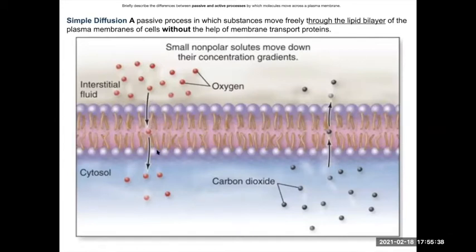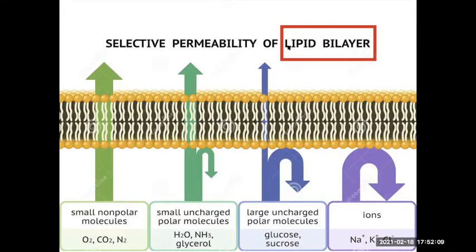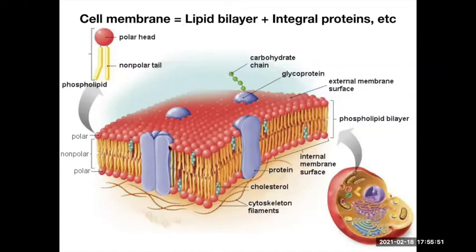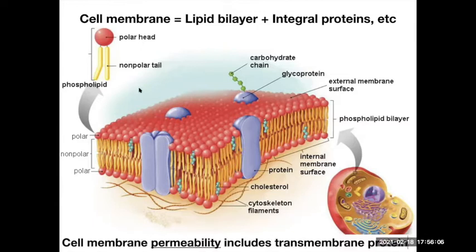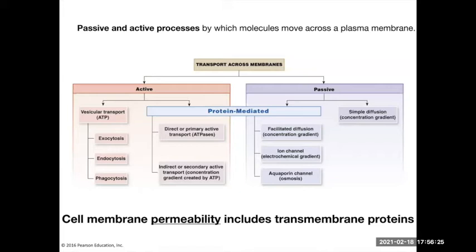Simple diffusion through the lipid bilayer — small non-polar solutes moving down their concentration gradient — happens without any help. But the cell membrane is more than just the lipid bilayer; it also contains proteins embedded within it. These proteins add to the membrane's permeability by letting in things the lipid bilayer wouldn't allow. When talking about membrane permeability, it's not just the fatty lipid portion — the transmembrane proteins also let specific things in, and they can be very selective. Molecules move through these proteins down their concentration gradient.